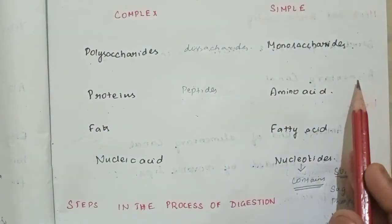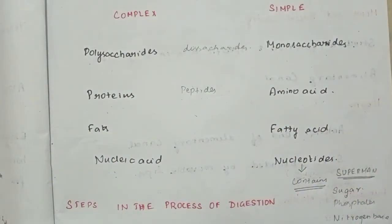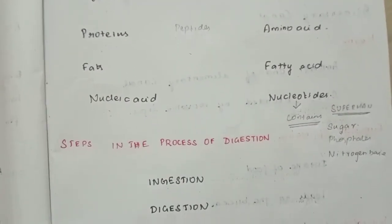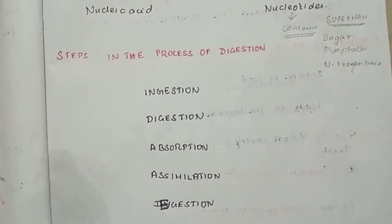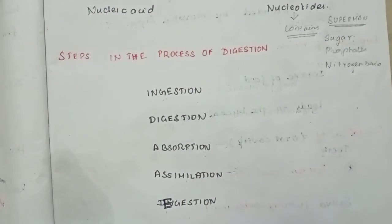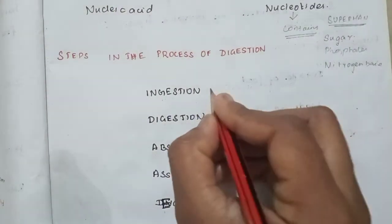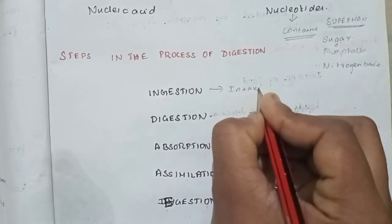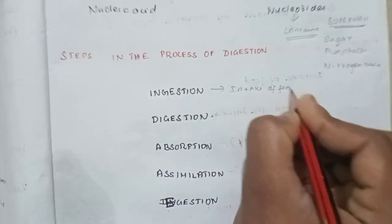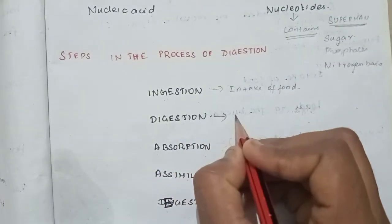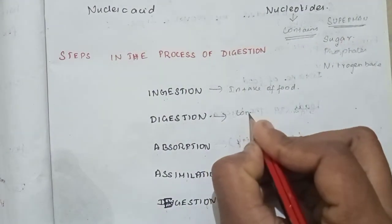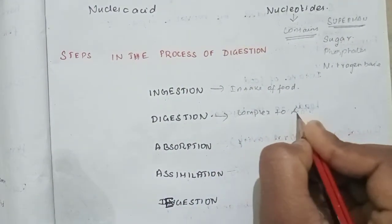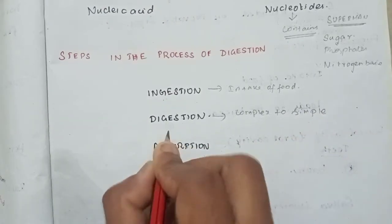Let's see how it's converted from complex to simple. Then, let's talk about steps in the process of digestion. What is the process of digestion? First, ingestion - intake of food. Second, digestion - complex to simple.